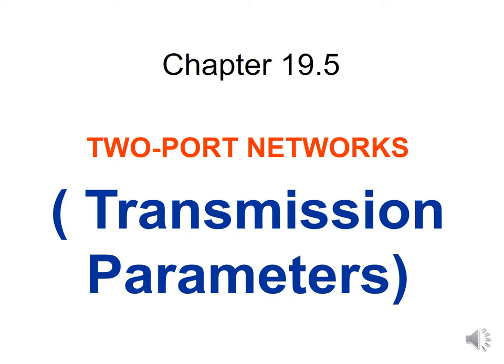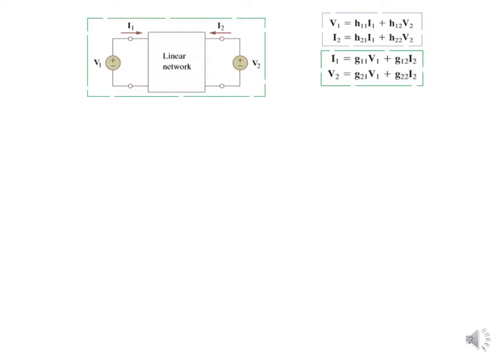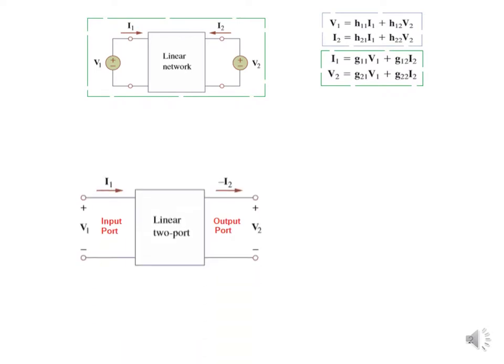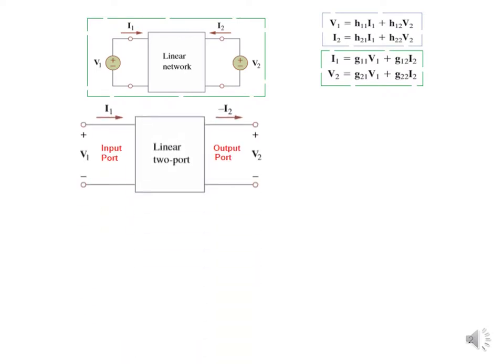In this video we'll study about transmission parameters of two-port networks. Like in the previous lectures on two-port networks, we saw that we have to connect either a voltage source, current source, or combination to the two sides of the network — the input side and output side. We also saw that in case of hybrid parameters and g parameters, we have specific equations to solve.